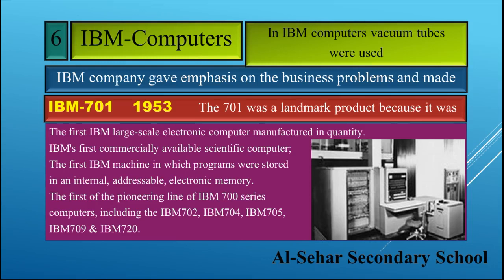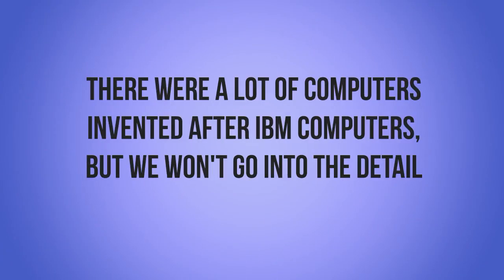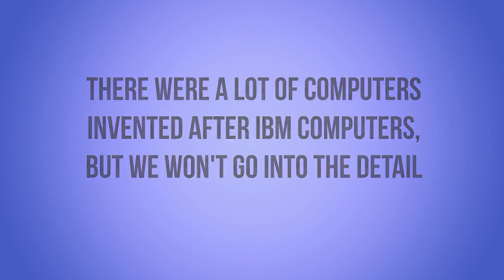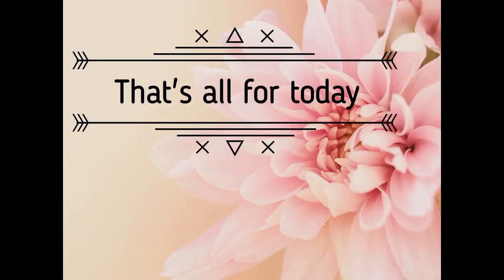The IBM 700 series included the IBM 702, IBM 704, IBM 705, IBM 709, and IBM 720. There were many more computers invented after the IBM series, but we will not go into the details. Hope you now know what modern computers are. That's all for today.